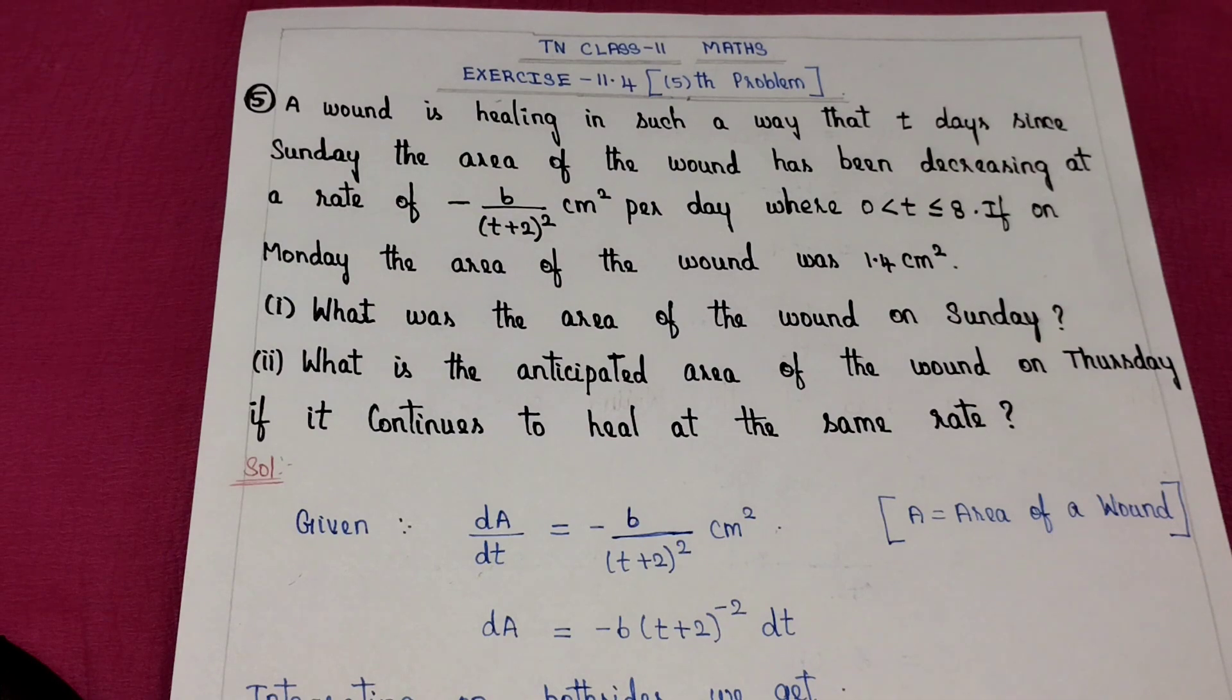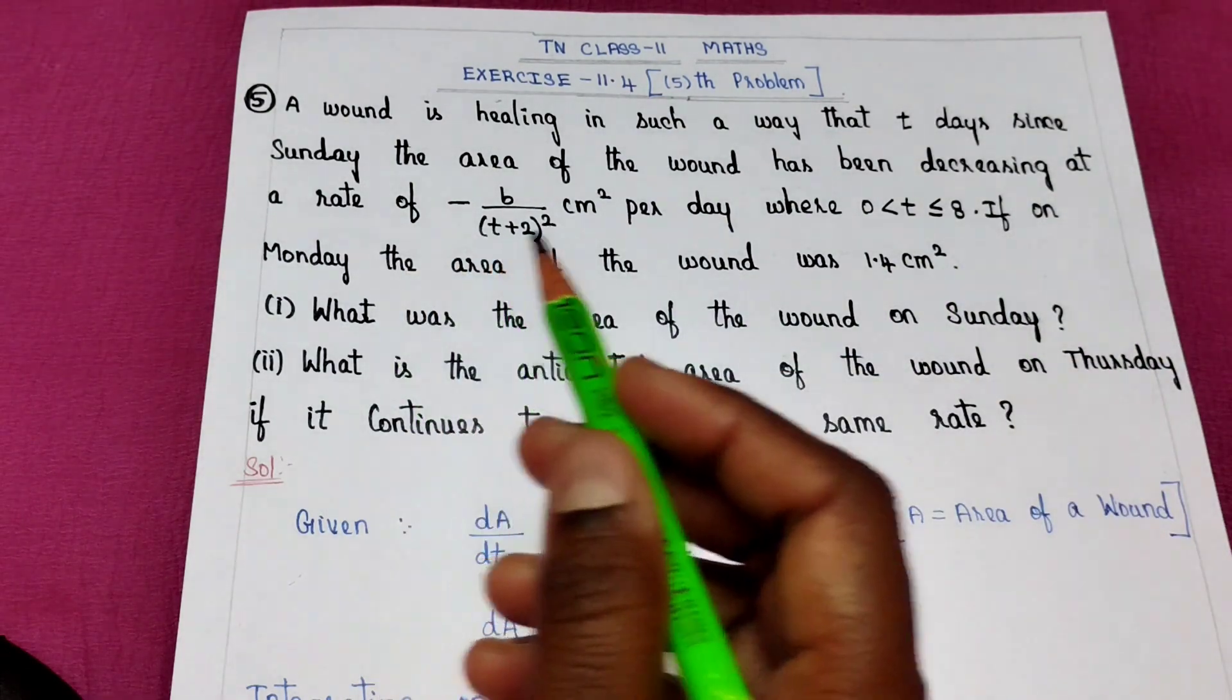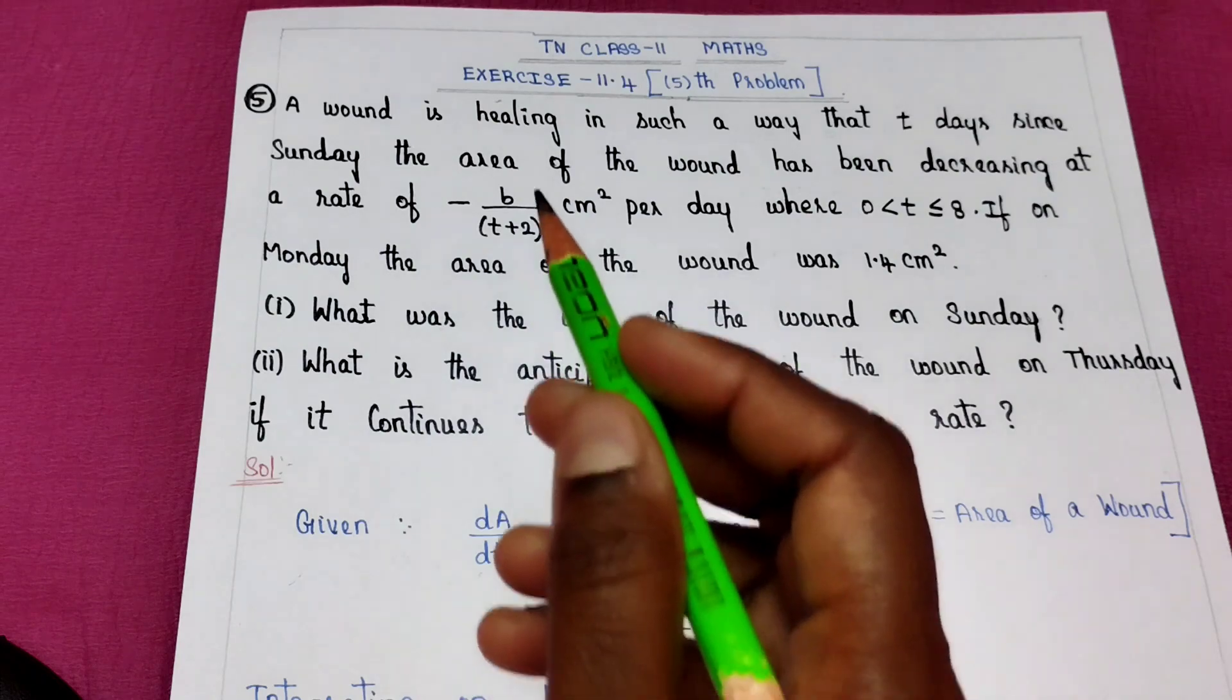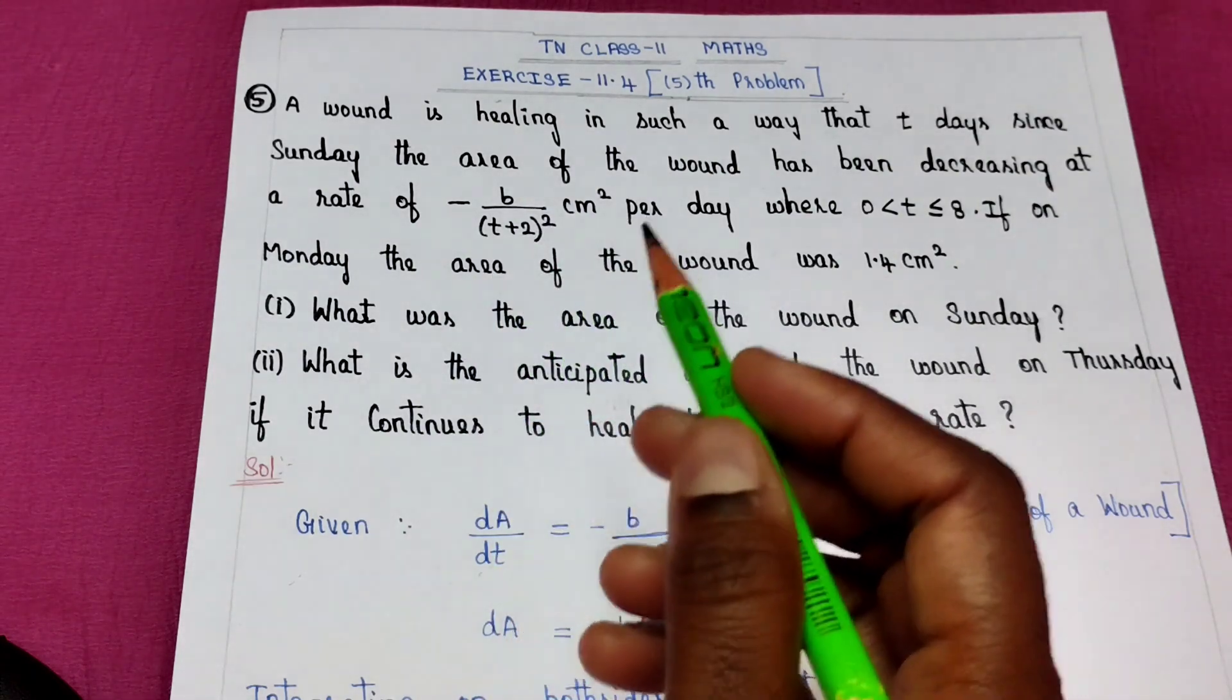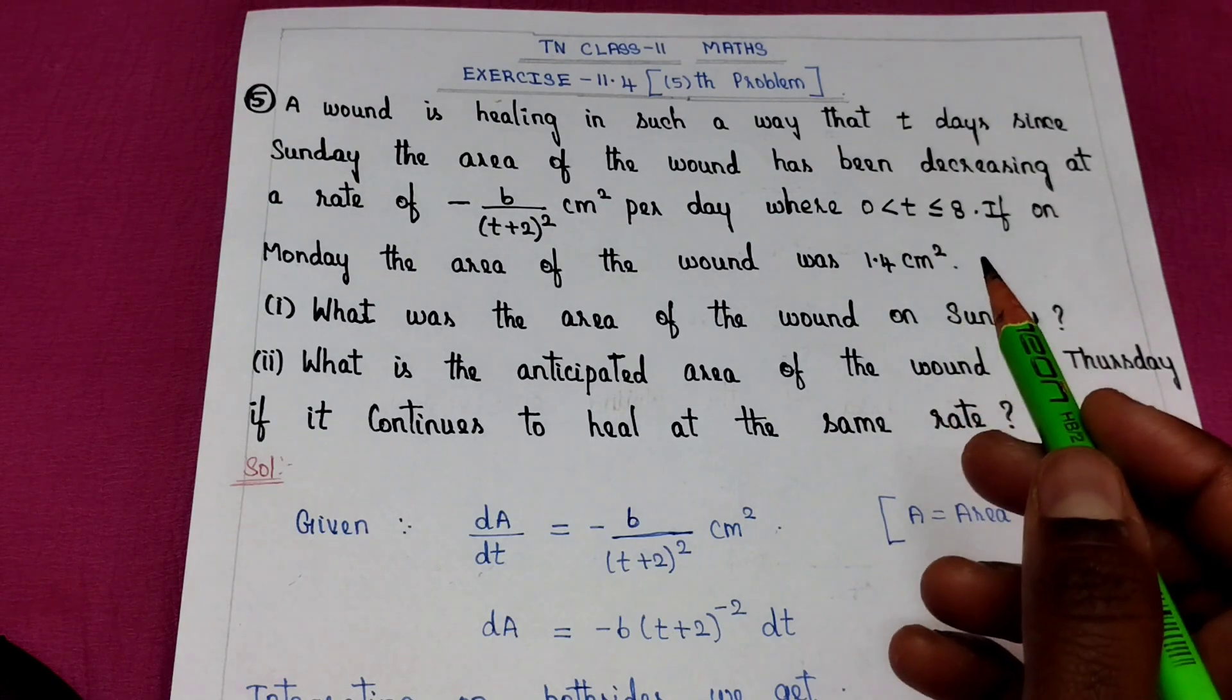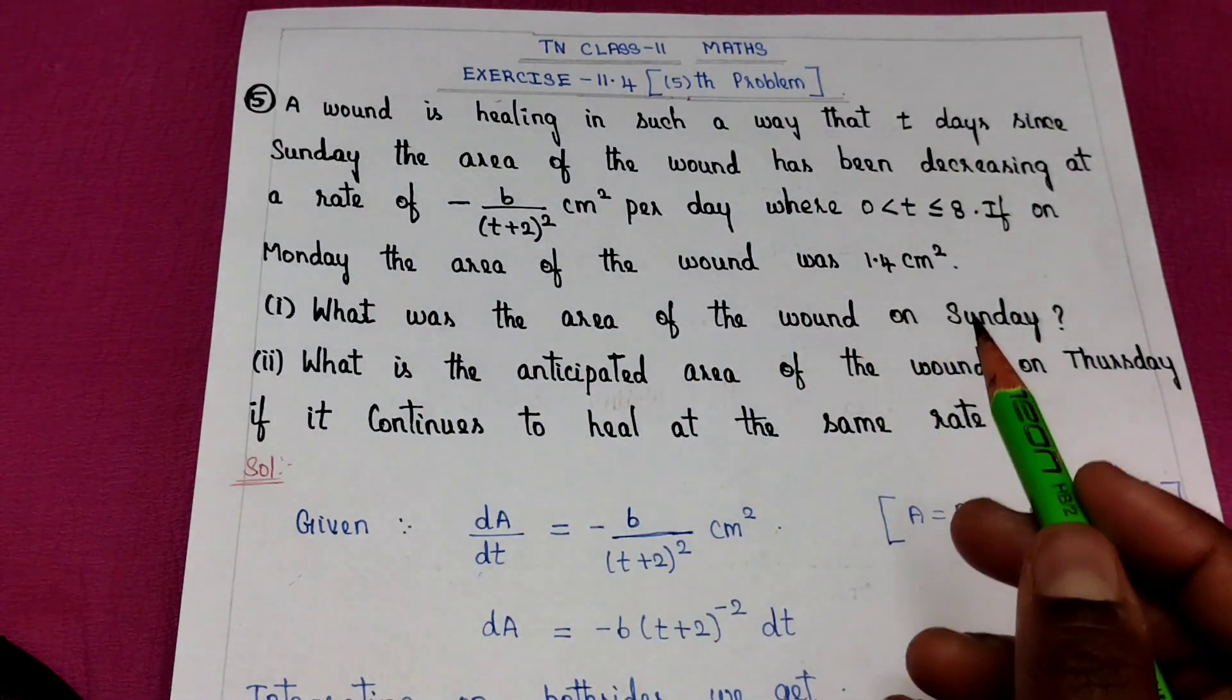The question is: A wound is healing in such a way that t days since Sunday, the area of the wound has been decreasing at a rate of minus 6 divided by t plus 2 whole square centimeter square per day, for 0 less than t less than or equal to 8. If on Monday the area of the wound was 1.4 centimeter square.